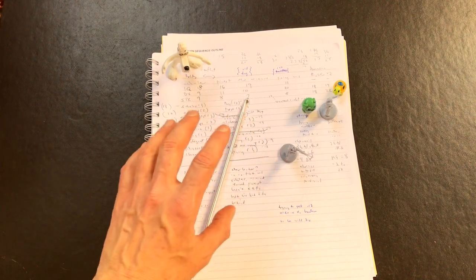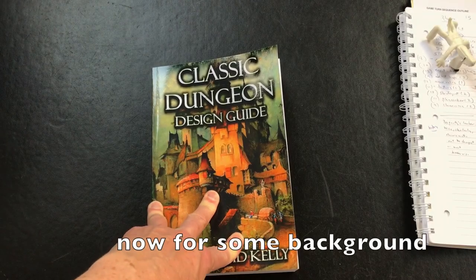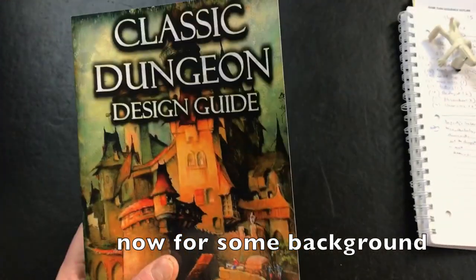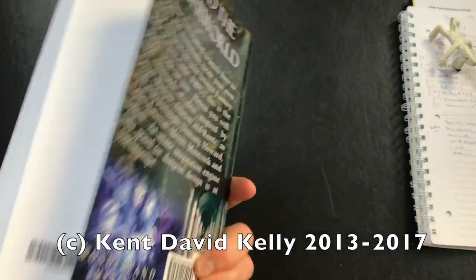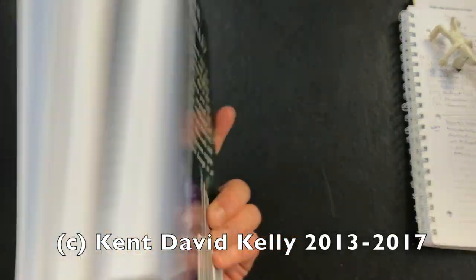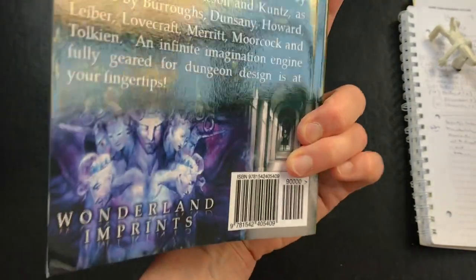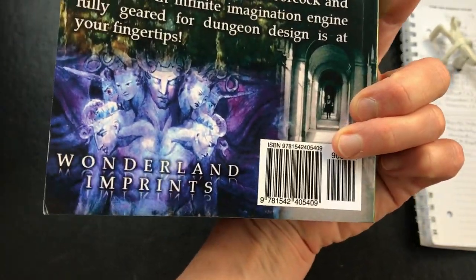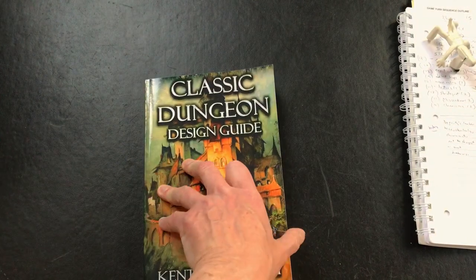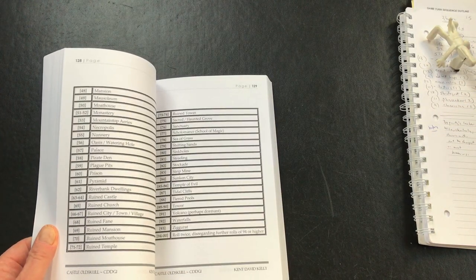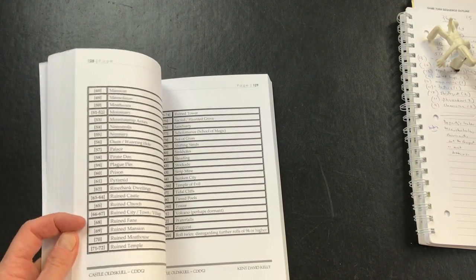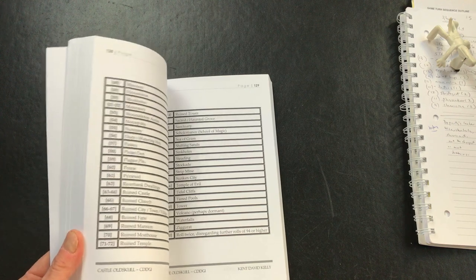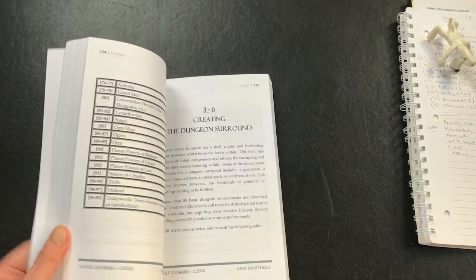To help flesh out my story I'm turning to the Classic Dungeon Design Guide by Kent David Kelly. This is available as an e-book and I think probably a PDF. I have a physical copy here from Wonderland Imprints.